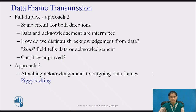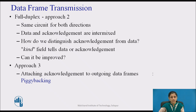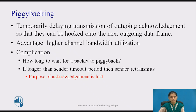Although interleaving data and control frames on the same link is a big improvement, yet another improvement is possible. When a data frame arrives, instead of immediately sending a separate control frame, the receiver waits until the network layer passes the next packet. The acknowledgement is then attached to the outgoing data frame using the ACK field in the frame header — the acknowledgement gets a free ride on the next outgoing data frame. This technique is known as piggybacking.